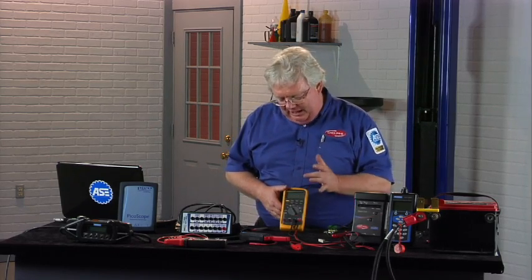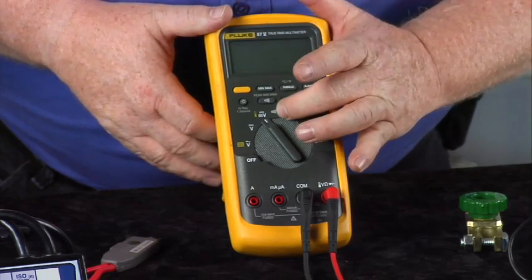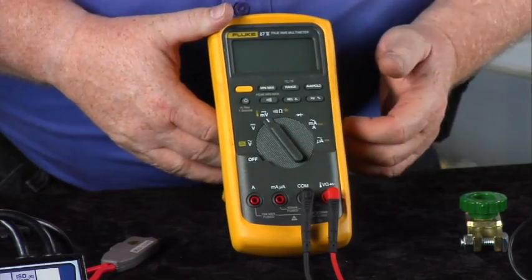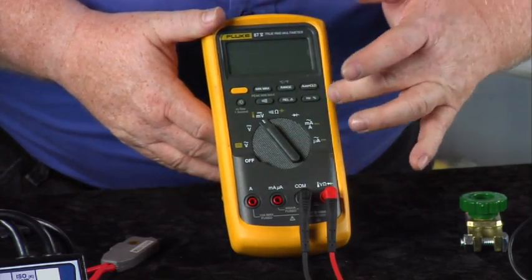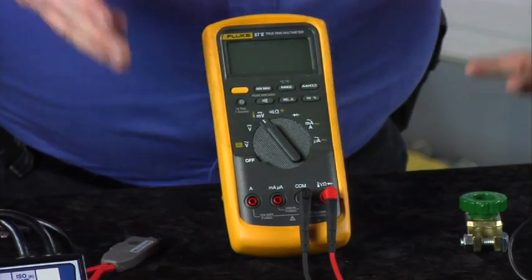It's got a V for volts, and it has a horseshoe symbol, the Greek letter omega for ohms, and of course A for amps or mA for milliamps.